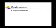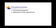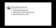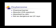Oxybenzone, or benzophenone, acts as a chemical barrier between you and the sun. It absorbs most of the UVA spectrum and UVB spectrum, offering maximum protection. However, oxybenzone does have some drawbacks. It gets absorbed by the skin and into your body. This can have negative effects, but it is not nearly as dangerous as UVA and UVB rays.